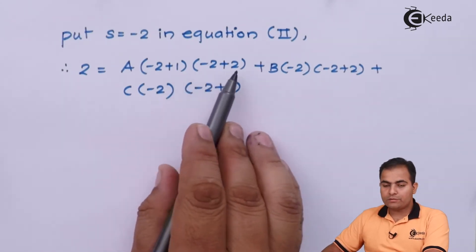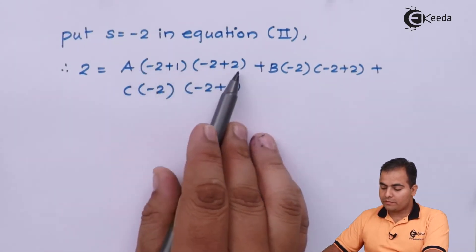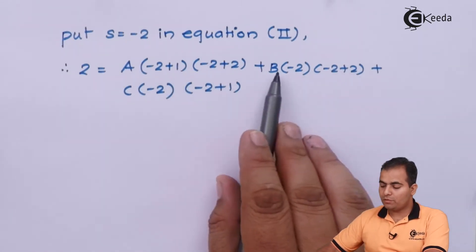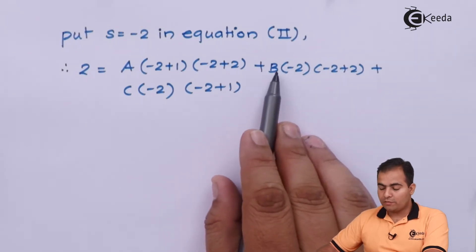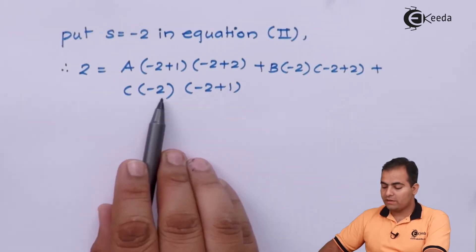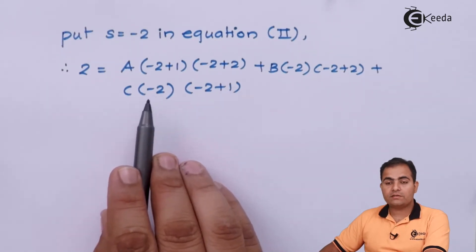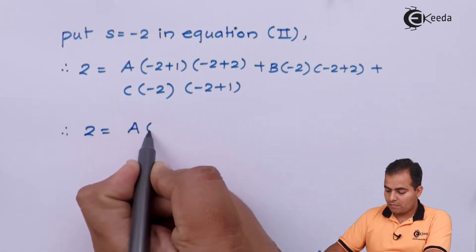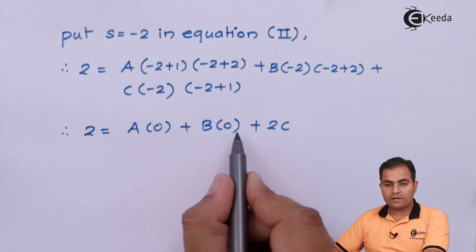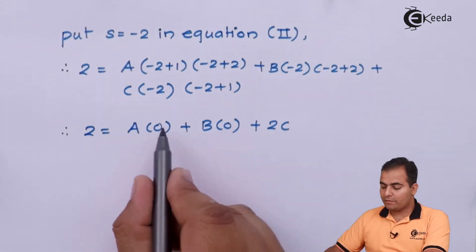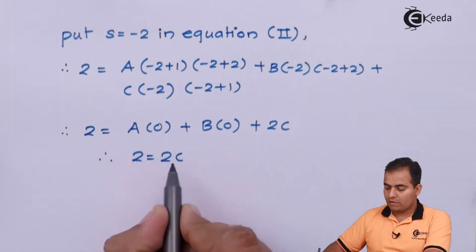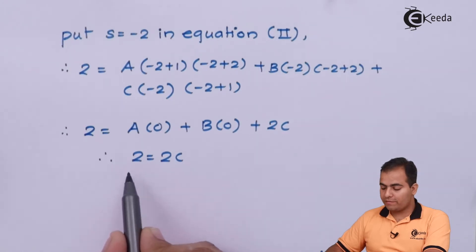Substituting S equal to minus 2: minus 2 plus 2 becomes 0, so the A product becomes 0. Minus 2 into 2 also becomes 0, so the B product becomes 0. For C, minus 2 plus 1 gives minus 1, and minus 1 times minus 2 gives plus 2. So we have 2 equals 2C, and after shifting, C equals 1.